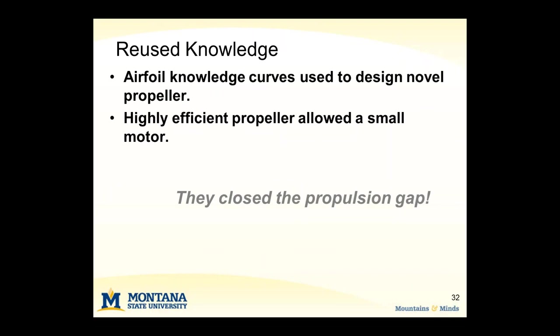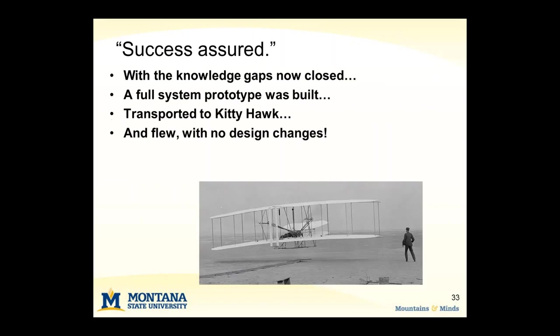They had closed the propulsion gap with that wind tunnel data. Now with all the knowledge gaps closed, they designed and built a full system prototype that they transported down to Kitty Hawk. The first test flight actually crashed, but that was due to pilot error. One of the brothers sent a telegram to their father explaining that success was assured because they knew the aircraft was going to work — it was just pilot error. They made the repairs, and then it flew the maiden voyage, which is the one in the history books.